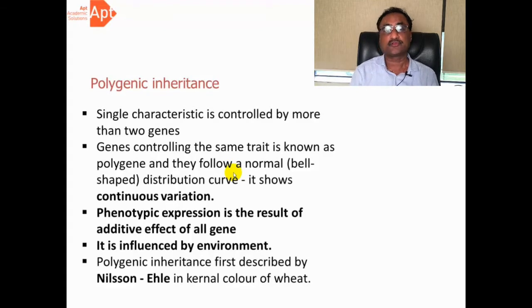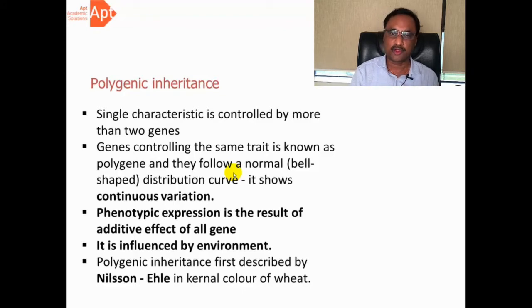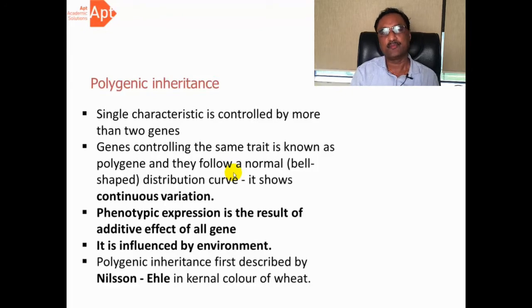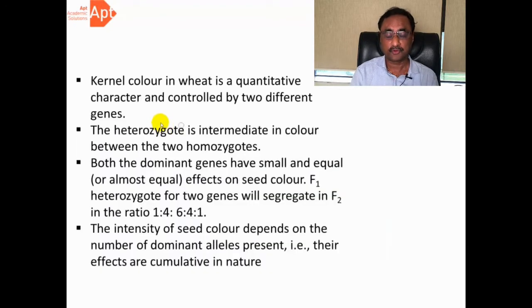Very interestingly, polygenic inheritance is also going to be influenced by the environment. That is yet another important thing we see in case of polygene. Different workers have done work on polygene, but the very first work was identified in the form of kernel color of wheat, way back by Nelson and Ehle. Later on, Davenport worked on human skin color, which is also a polygenic trait.